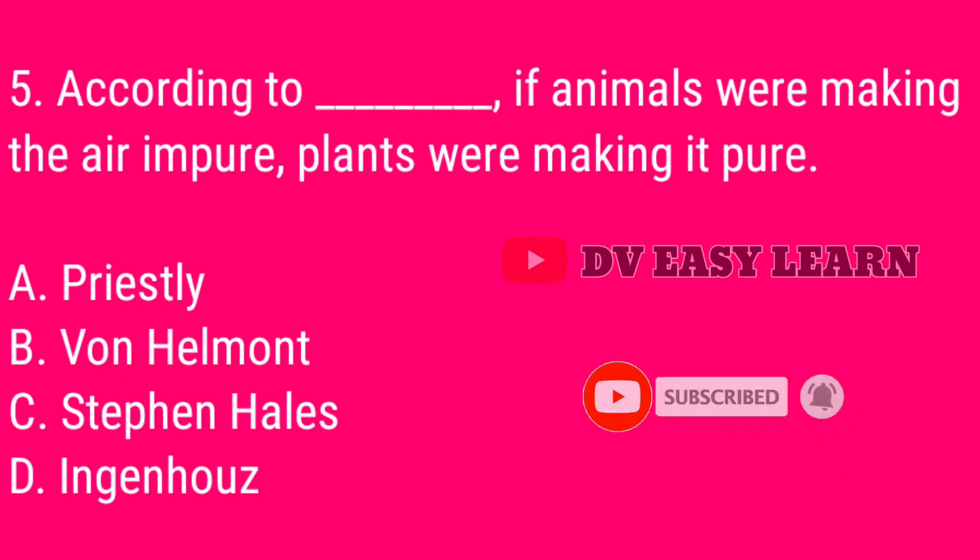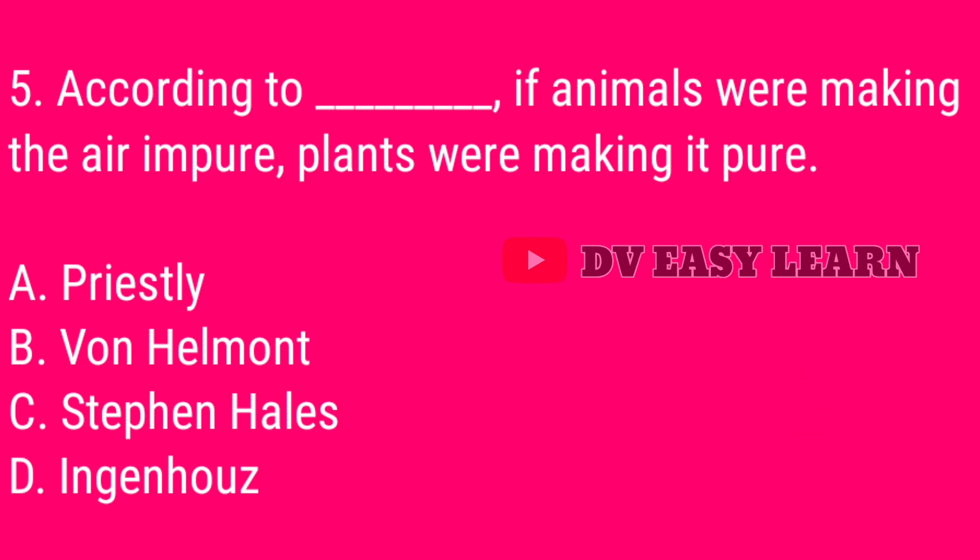Question number 5. According to Van Helmont, if the animals were making the air impure, plants were making it pure.